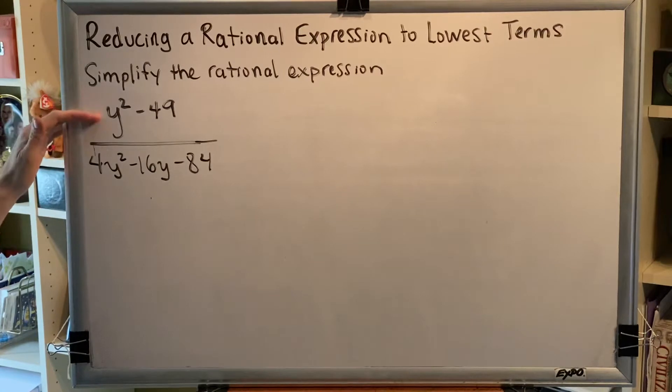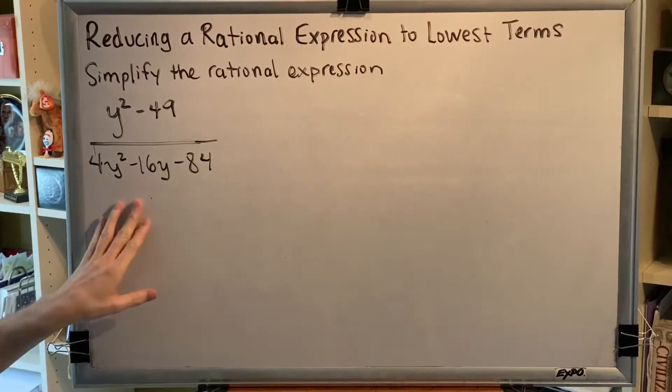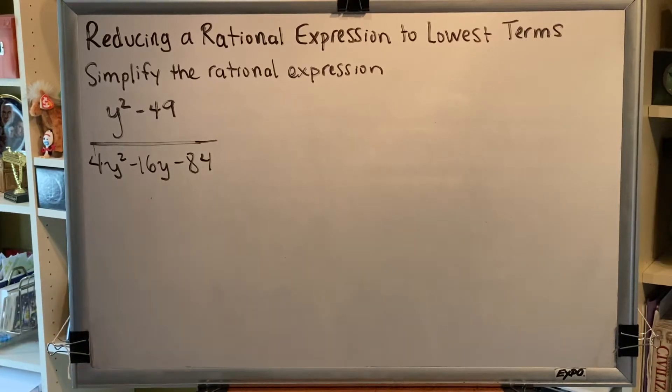Our numerator is y squared minus 49, and our denominator is 4y squared minus 16y minus 84. So the first thing we want to acknowledge is that a problem like this is solved using a two-step process.